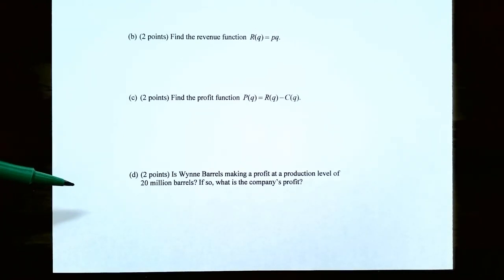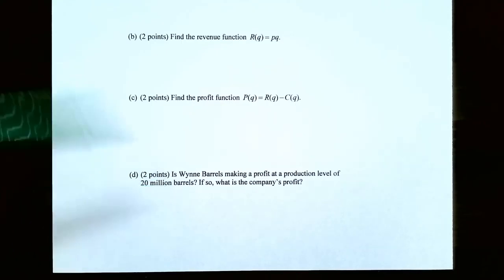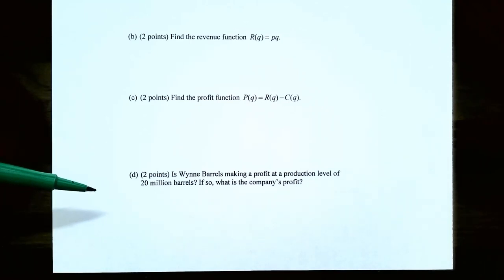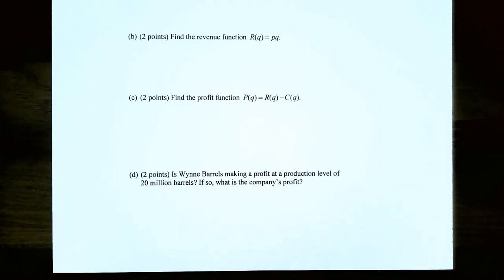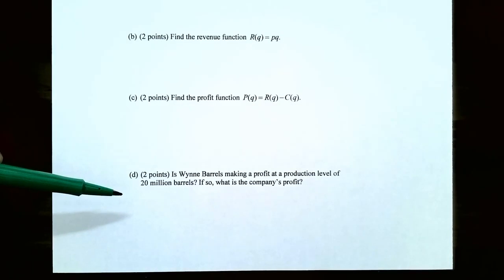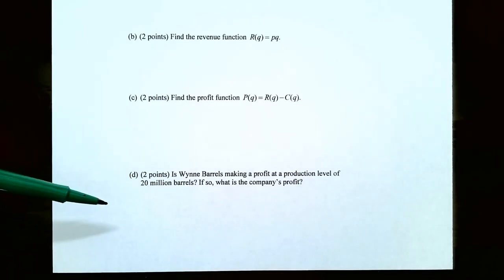In Part D, since Wayne Barrels is slated to produce 20 million barrels of oil, determine whether the company is making a profit at a production level of 20 million barrels, and if so, what is the actual profit. From Part C you have the profit function; in Part D you evaluate it at Q equals 20. Keep in mind Q equals 20, not 20 million, because Q's units are already in millions of barrels.